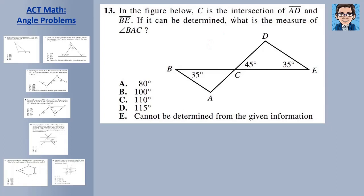In this problem, C is the intersection of lines AD and BE. We need to find angle BAC. We can find angle BCA because it's a vertical angle to the 45-degree angle where the two lines cross, so that's 45. Then 45 and 35 gives us 80, and since these must form 180 degrees in a triangle, 180 minus 80 gives us 100.